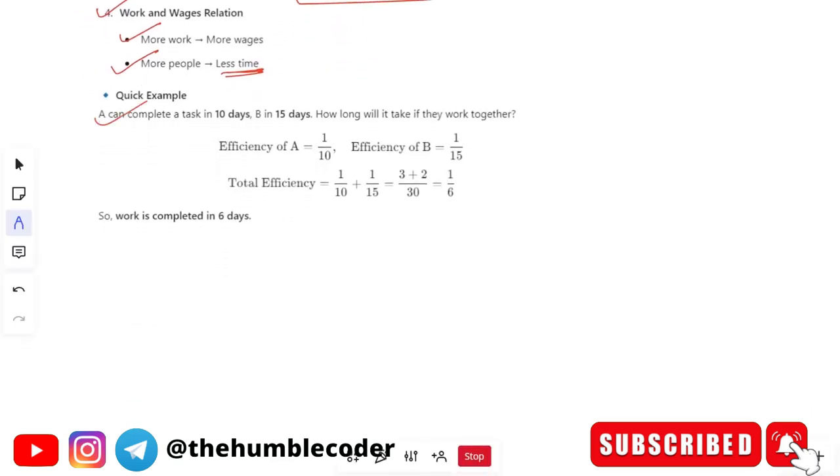Let's see a quick example. A can complete a task in 10 days, B in 15 days. How long will they do the work together? So we will just calculate the efficiency of a which is 1 by 10 and efficiency of b is 1 by 15. Total efficiency we will get as 1 by 6. So the work will be completed in 6 days.